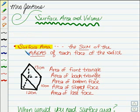Surface area is just like it sounds. It's the sum of the areas of each face of the solid. So it's the sum of the areas of the surfaces. If you take a look at this drawing here and you counted the surfaces, we're going to have how many surfaces here?